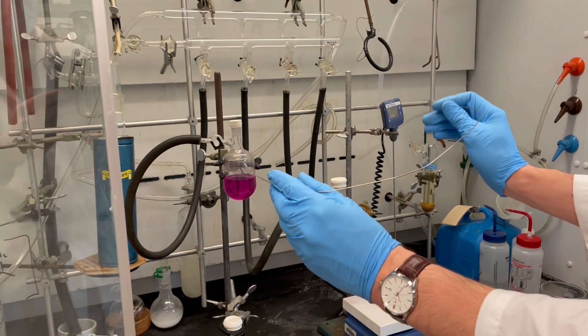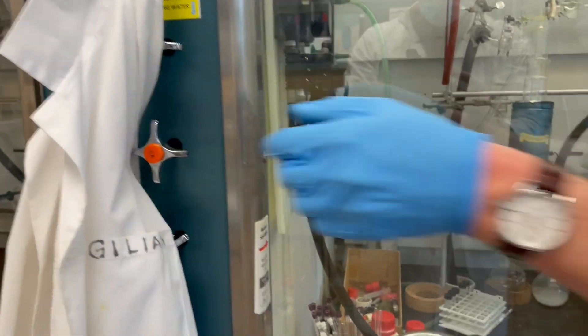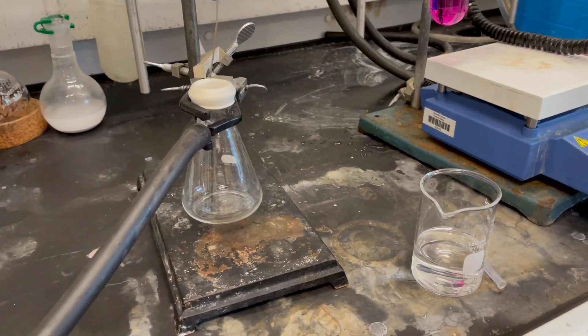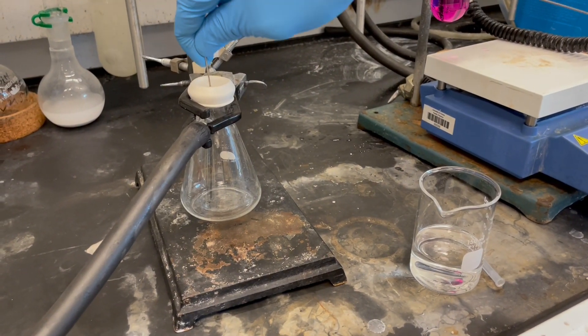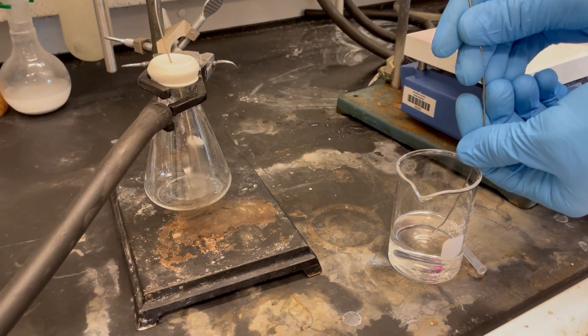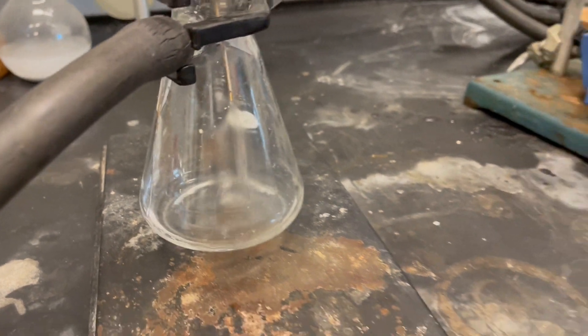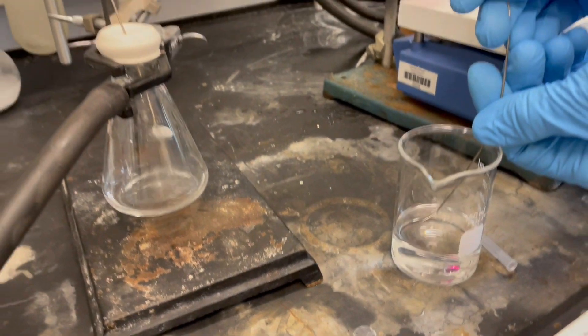Now we need to clean the inside. We can take a beaker of acetone, and with a flask under vacuum, insert the needle. Insert one end into the acetone and give it a couple seconds to clean out the inside of the cannula.